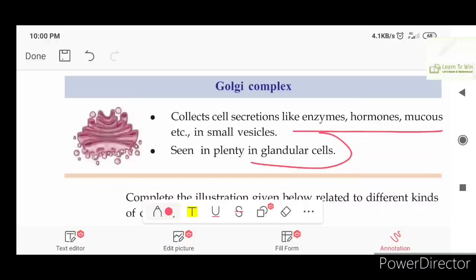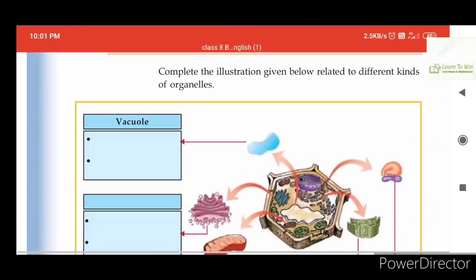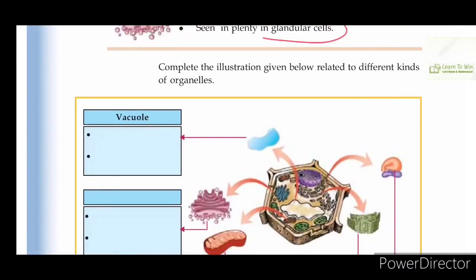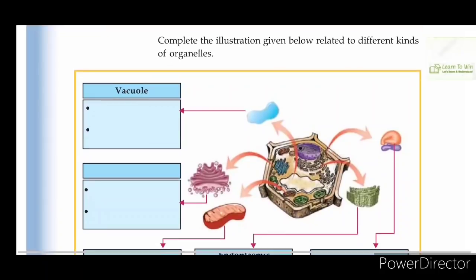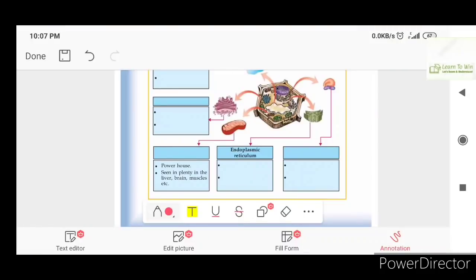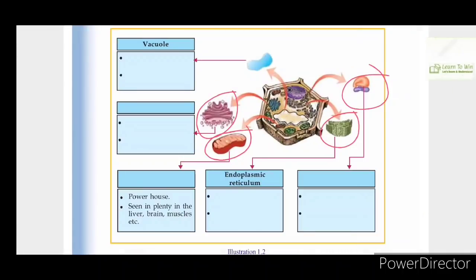A complete illustration is given below related to different kinds of organelles. This is the Golgi complex. This is the mitochondria. This is a plastid. This is the endoplasmic reticulum. This is a ribosome. I have already explained these functions.